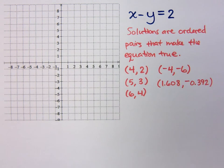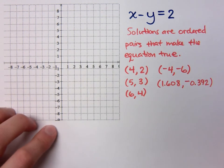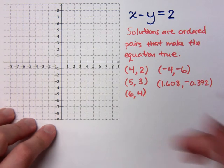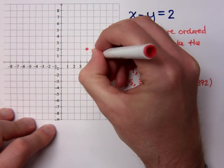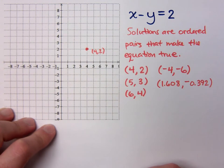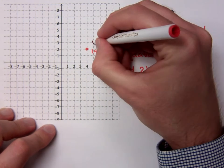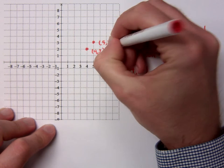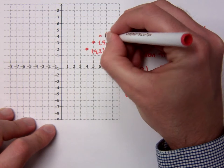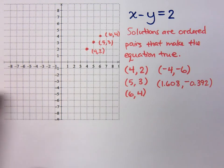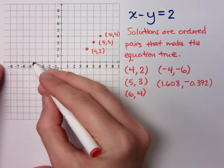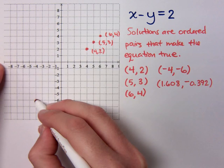Look what happens when we try to plot these guys. If I try to plot the ordered pairs that you came up with, so we've got 4, 2 is right here. I've got the ordered pair 5, 3. So here's 5, 3. And you guys also said 6, 4. Now, I said negative 4, negative 6. So negative 4, negative 6 is right here.